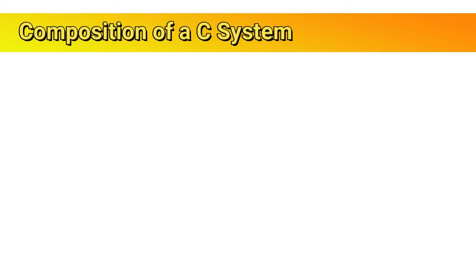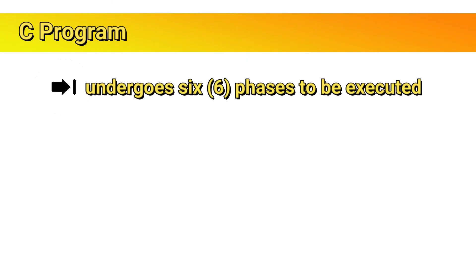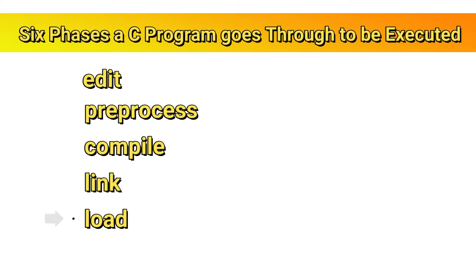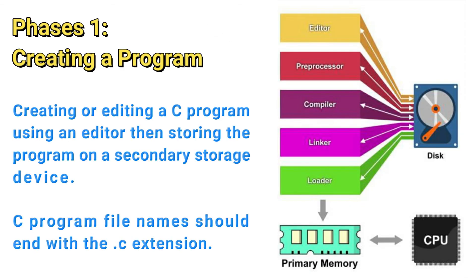Now let's proceed with the last topic: the C program development environment. C systems generally consist of several parts: a program development environment, the language, and the C standard library. C programs typically go through six phases to be executed: edit, preprocess, compile, link, load, and execute. Phase 1 is creating a program, or what we call edit. This is the time you create or edit a C program using an editor. You make corrections if necessary, then store the program on a secondary storage device such as a hard disk. The C program file names should end with the .c extension.